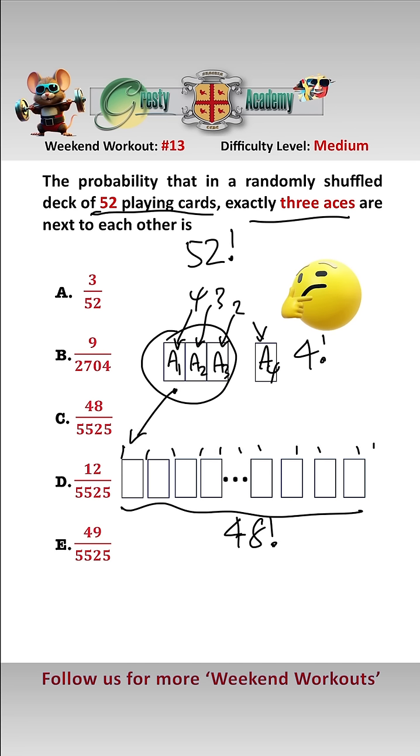And the other ace has to go in any one of the other 48 gaps. Remember it can't go next to the three aces because we want exactly three aces together.